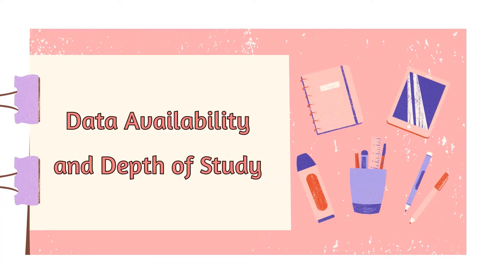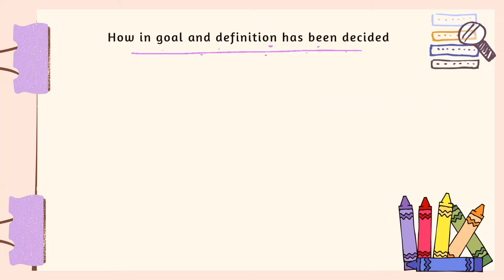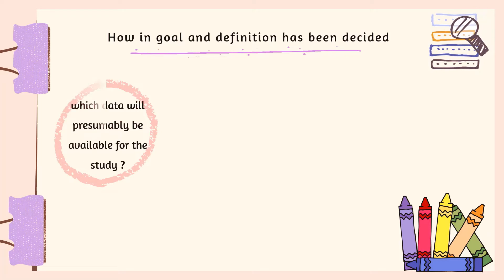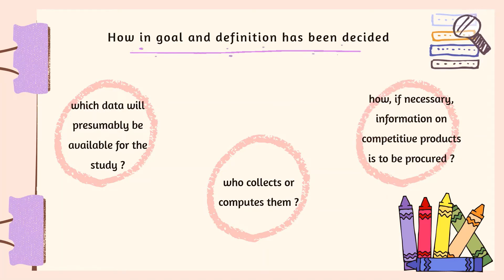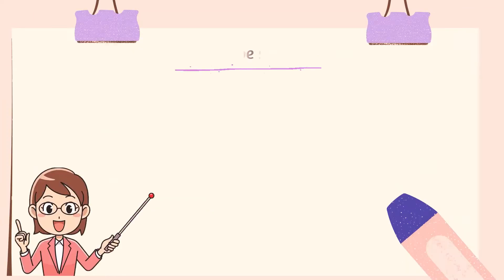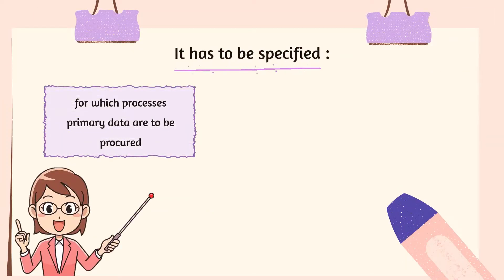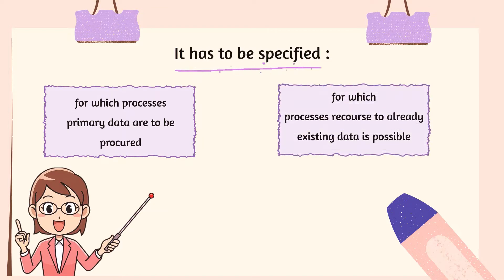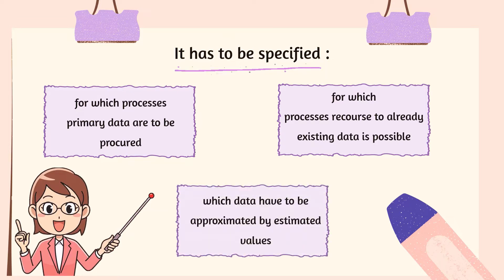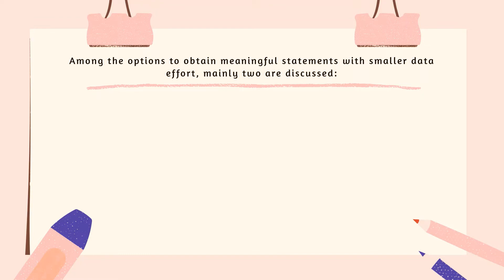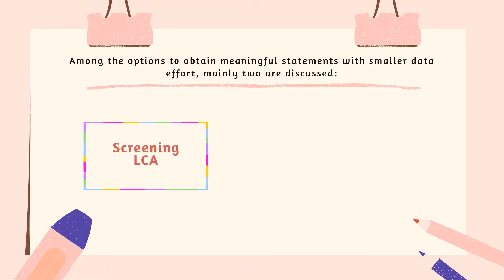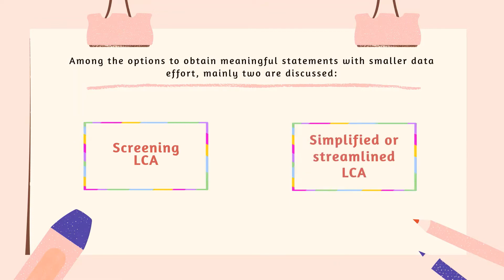Moving to data availability and depth of study. Once the goal and scope definition has been decided, it must be specified: how information on competitive products is to be procured, for which processes primary data are to be procured, for which processes recourse to already existing data is possible, and which data have to be approximated by estimated values. Among the options to obtain meaningful statements with smaller data effort, mainly two are discussed: first, screening LCA; and second, simplified or streamlined LCA.